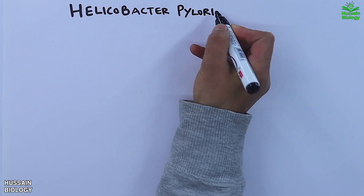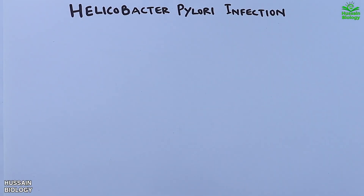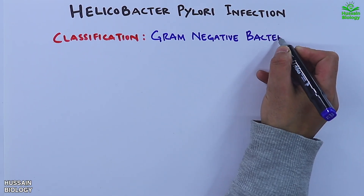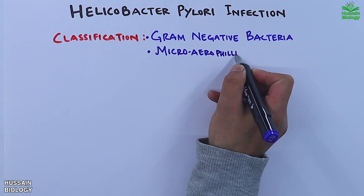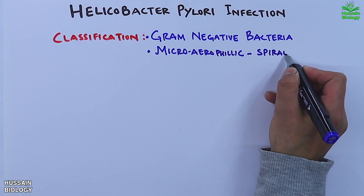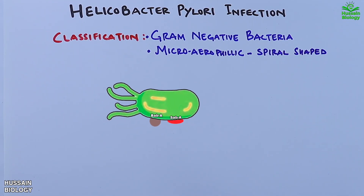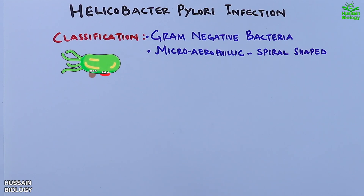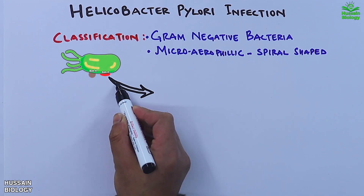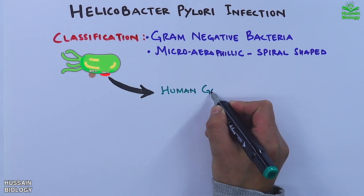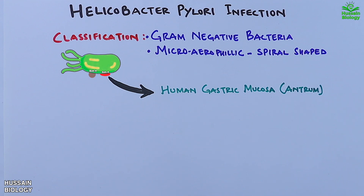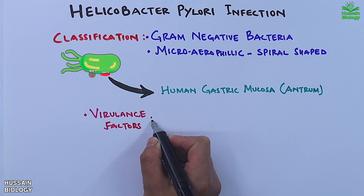In this video we are going to discuss Helicobacter pylori infection. It's a gram-negative bacterium with a microaerophilic nature and a distinct spiral shape, as shown in the diagram. This unique morphology helps it colonize the human gastric mucosa, specifically in the antrum of the stomach. Now moving on to its virulence factors.